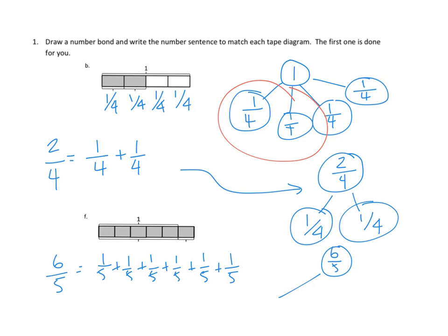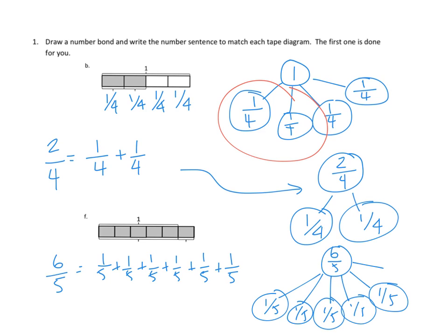And put another way, we could do that number bond this way. We could say 6/5 is made up of 1, 2, 3, 4, 5, 6 — each of those would be 1/5. 6/5 are made up of 1, 2, 3, 4, 5, 6 fifths. If we were doing our drawing here, we would say that this is 5/5 plus 1 more 1/5. So that's another way we could express our equation: 5/5 plus 1/5 is 6/5.